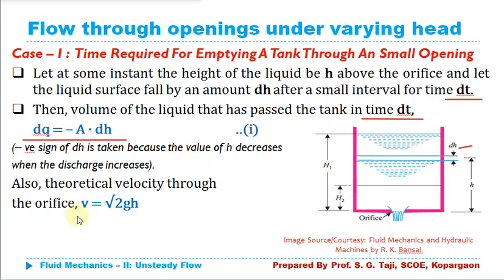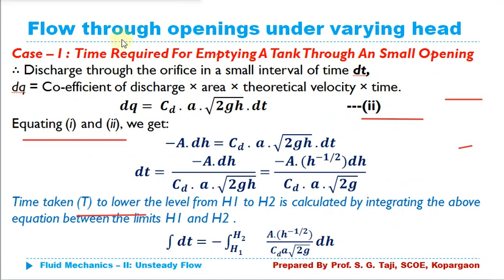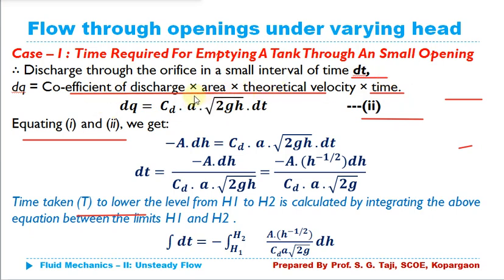The theoretical velocity is given by V = √(2gH). The volume of water taken out can also be computed using the discharge equation: discharge equals area multiplied by velocity. Multiplying by the coefficient of discharge gives actual discharge: CD × a × √(2gH). Multiplying by time dt gives volume. Equating the two volume expressions: -A·dH = CD × a × √(2gH) × dt.